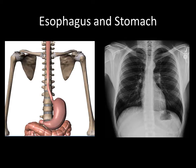For the GI tubes, it's pretty simple. We'll be looking on radiographs to see the stomach on the left side, below the hemidiaphragm. People often talk about the stomach bubble, which is the landmark you'll use to confirm that the GI tube is terminating in the stomach.